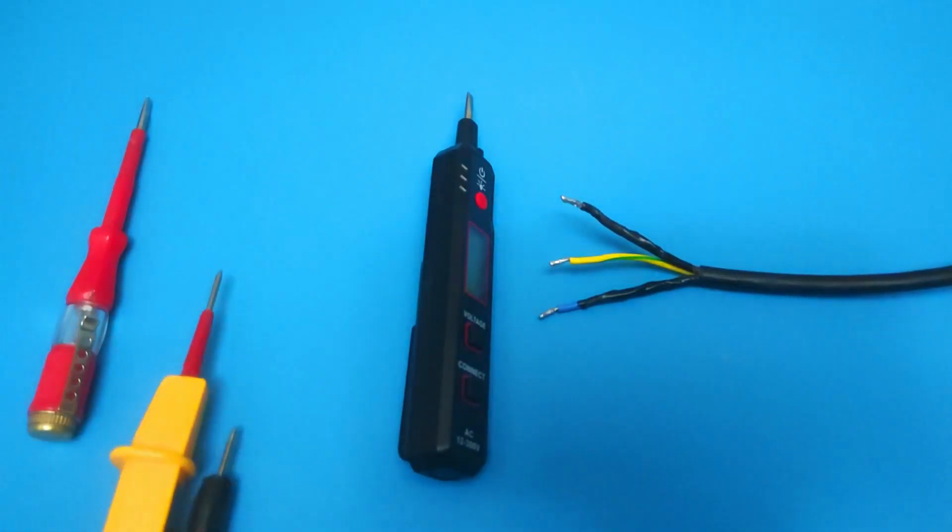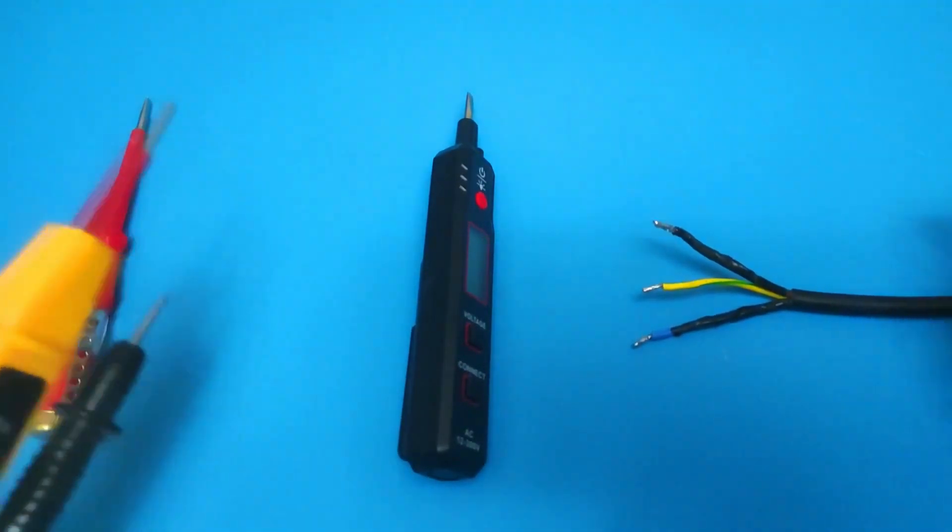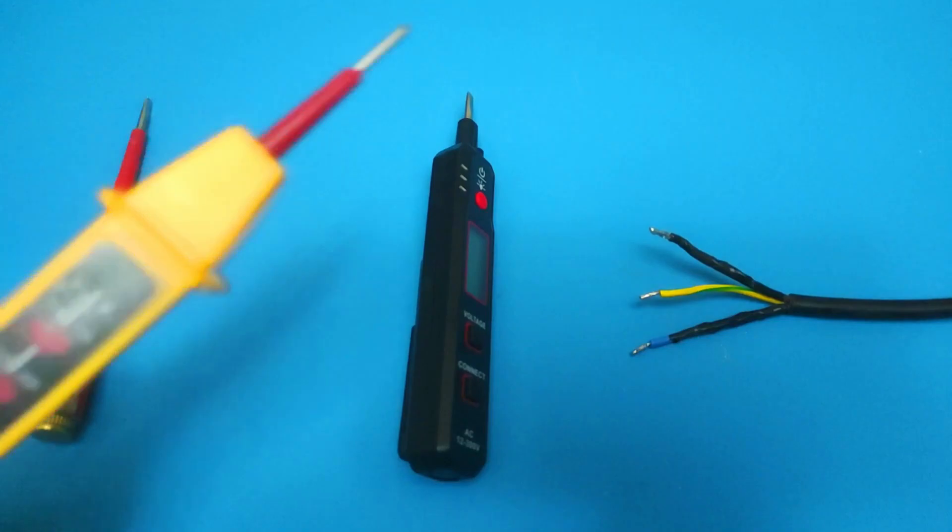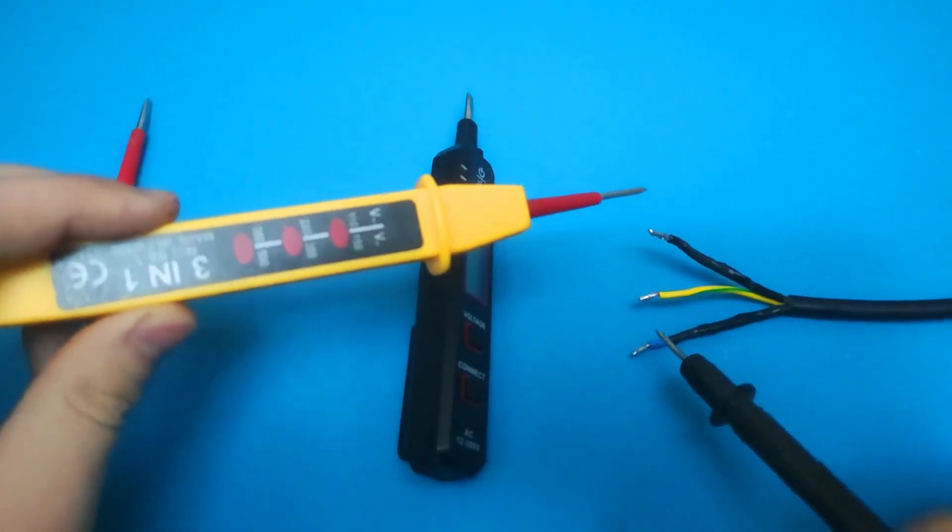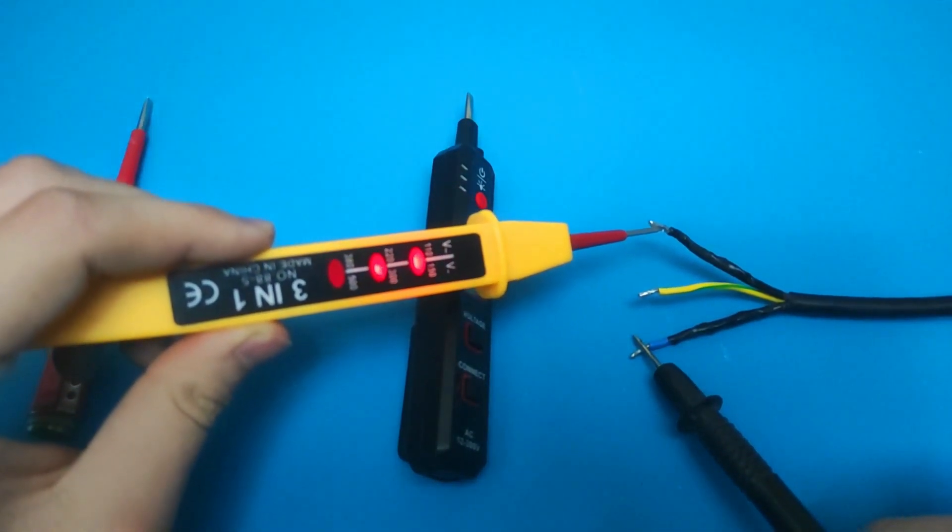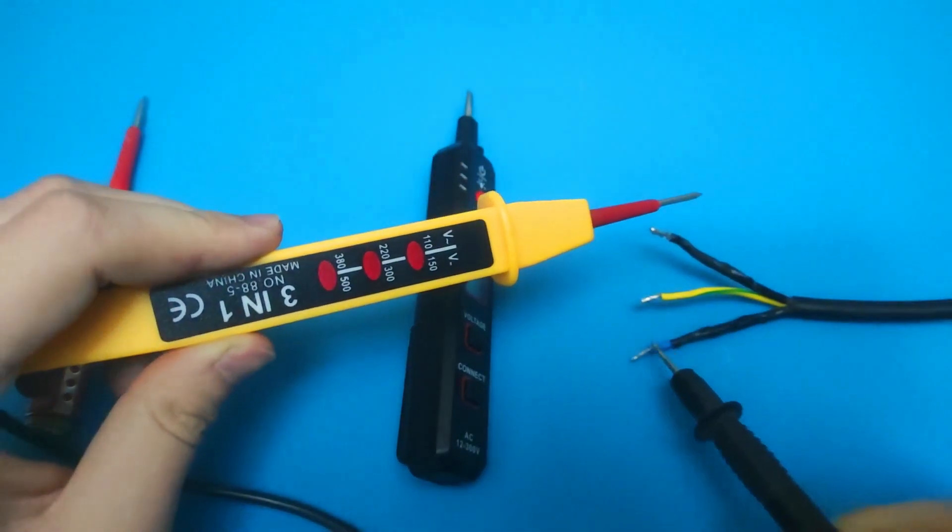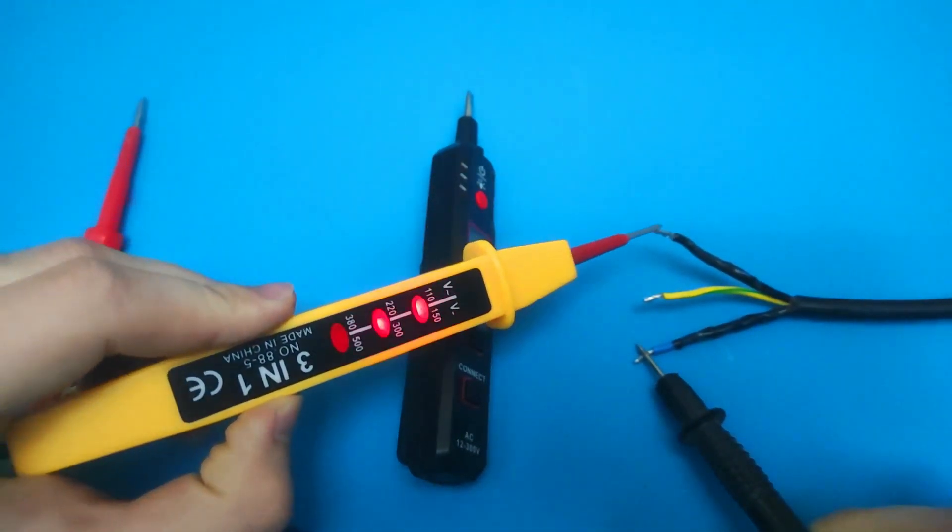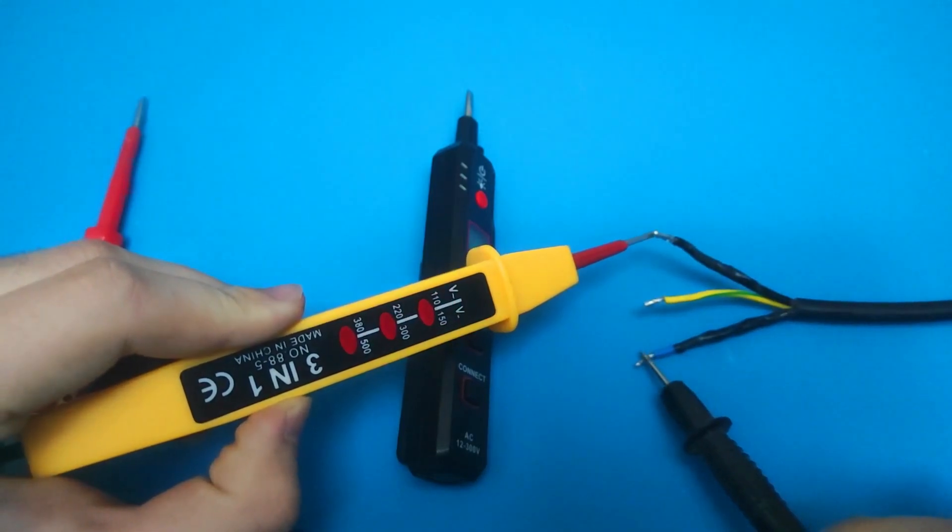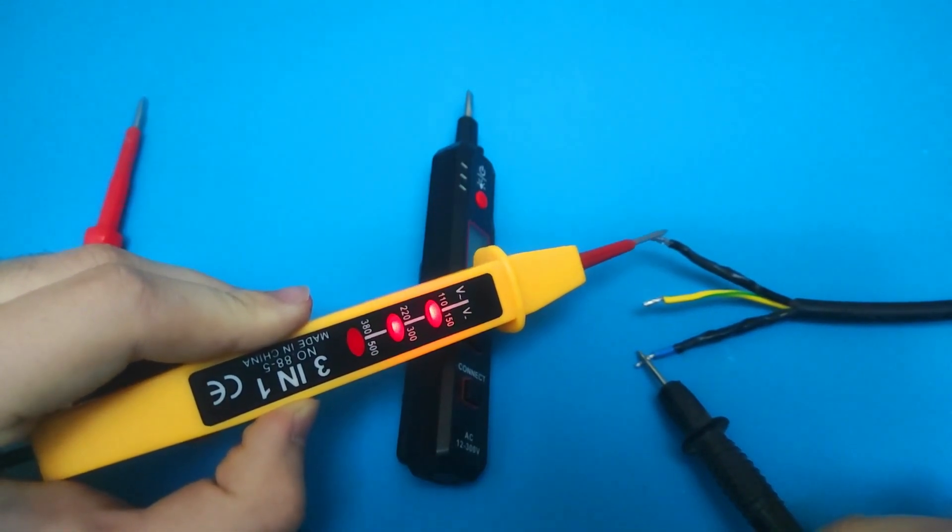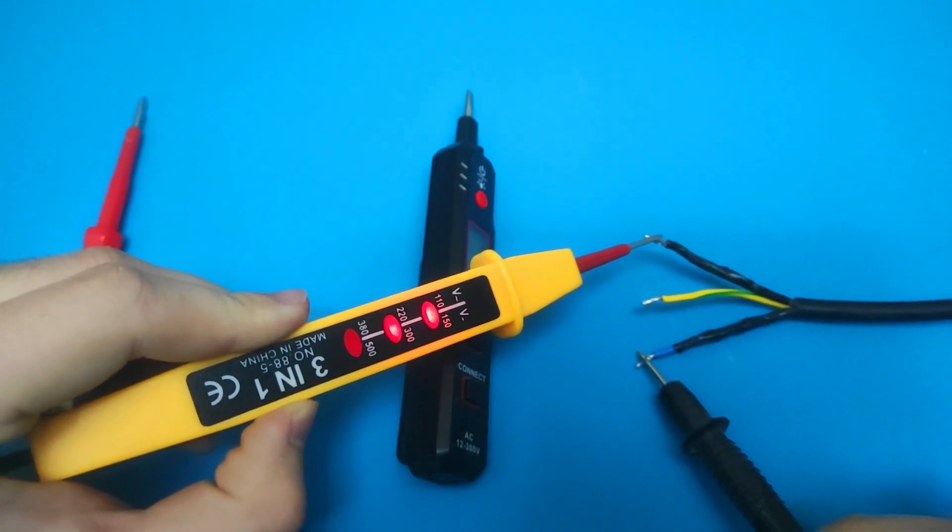With this type of tester, you can roughly know what the voltage range is, but you still don't know exactly. You must also have two test wires here. It's not bad, but we still need a more precise answer as to what the voltage is.